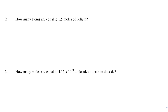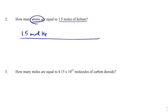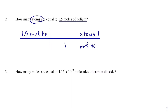Number 2 says: how many atoms are equal to 1.5 moles of helium? I'm given 1.5 moles of helium and I need to convert it to atoms. Whatever I'm given starts my fence. Because moles is in the numerator, I need to move moles to my denominator so they cancel, and convert to atoms. In 1 mole of helium, there are 6.02 times 10 to the 23rd atoms of helium. When I math that out, I get 9.03 times 10 to the 23rd atoms of helium — a large number, which is what we expect.